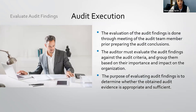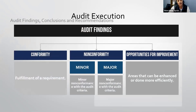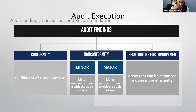The evaluation of audit findings is done through a meeting of the audit team members prior to preparing the audit conclusion. The auditor must evaluate audit findings against the audit criteria and group them based on their importance and impact on the organization. The purpose is to determine whether the obtained audit evidence is appropriate and sufficient. In audit findings there are conformities, major non-conformities, minor non-conformities, and opportunities for improvement.